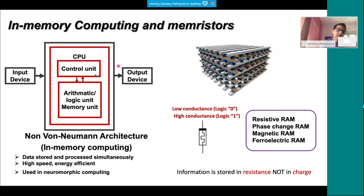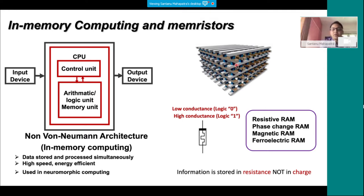In an in-memory computing system, the CPU and memory are not separable. Data is stored and processed simultaneously — high-speed, energy-efficient — and is used heavily in neuromorphic computing. The realization is a new architecture called crossbar architecture, which is heavily dense and stackable. At the junctions of this crossbar are something called memristors or resistive memory — two-terminal devices. Each joining point of the crossbar contains a resistive memory element.